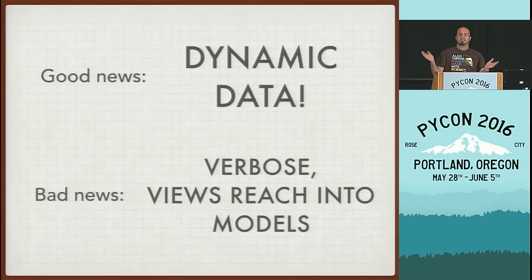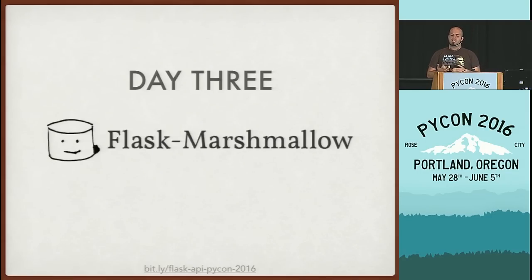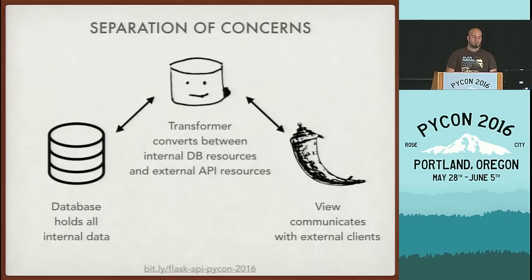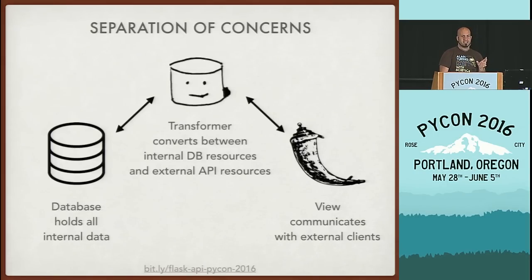Now we have dynamic data. But our code is still kind of verbose, and the views are reaching into the models — the data isn't as well separated as we'd like. The view still needs to know which attributes of the model to pull out into JSON. So we're going to add a new module called Flask Marshmallow. It's a data transformer — it converts between an internal representation of a resource and an external representation. The database holds the data, Marshmallow transforms from internal data to what we want to view in the API, and Flask renders it in JSON.